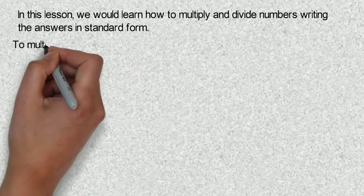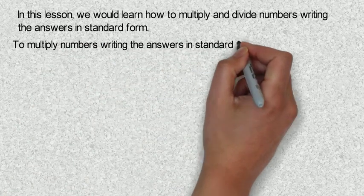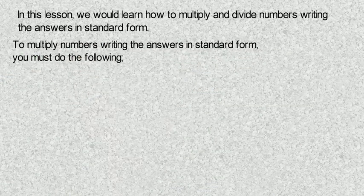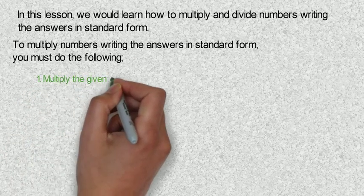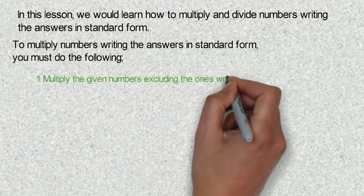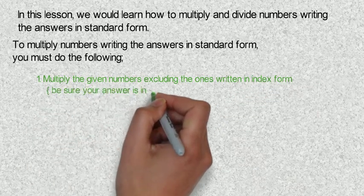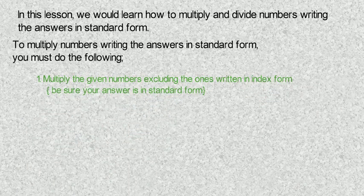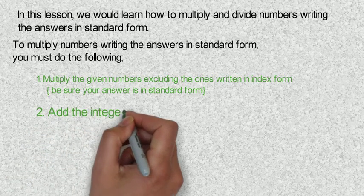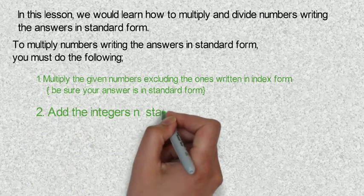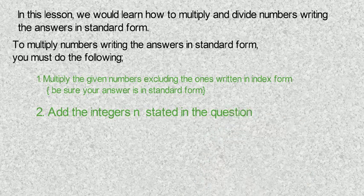To multiply numbers and write the answers in standard form, you must do the following. First, multiply the given numbers excluding the ones written in index form, then be sure your answer is in standard form. Second, add the integers as stated in the question — that is, you add the powers.